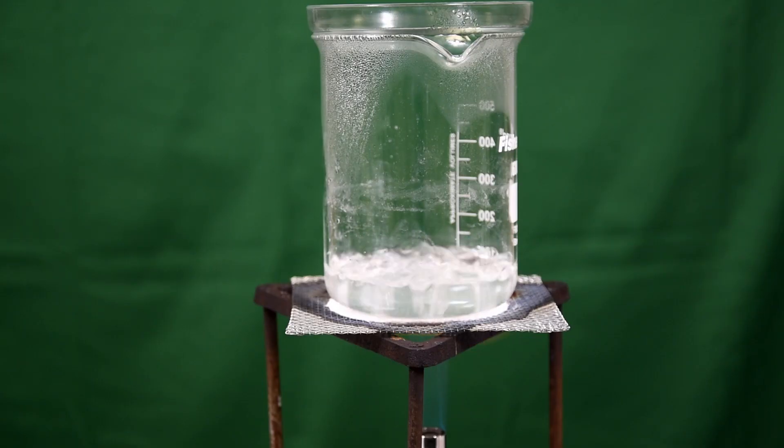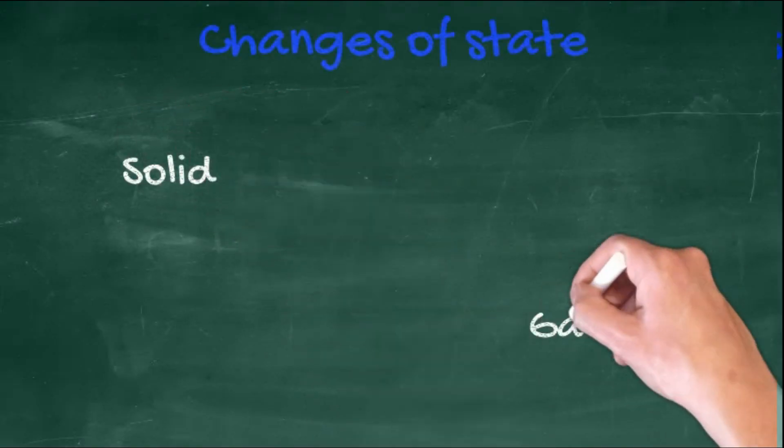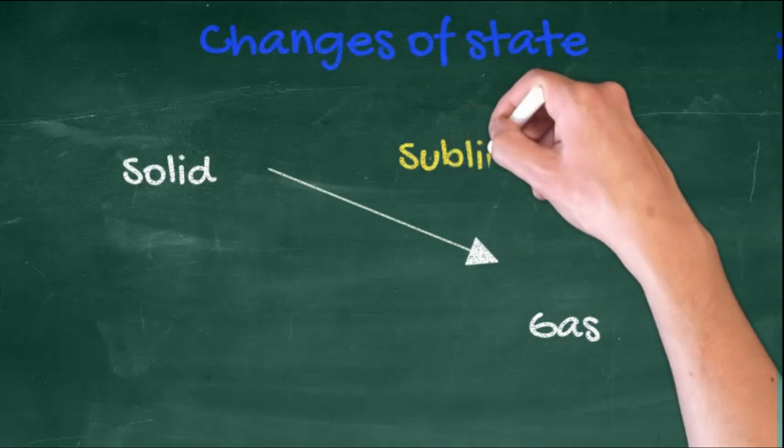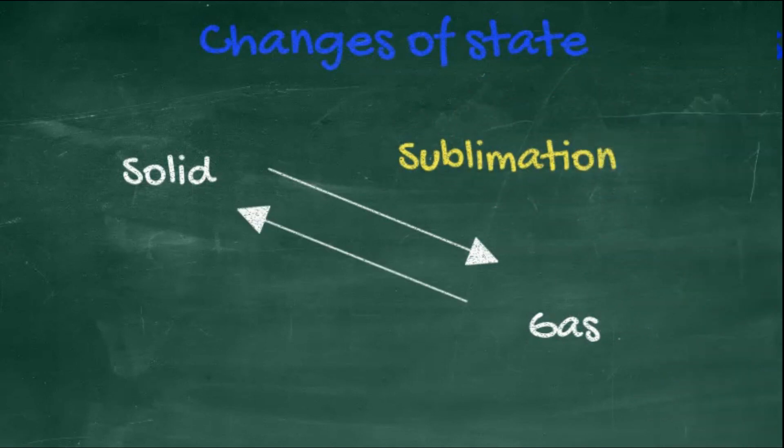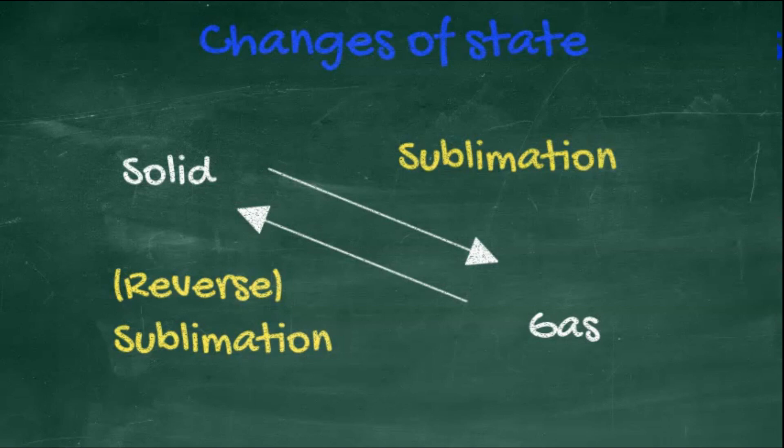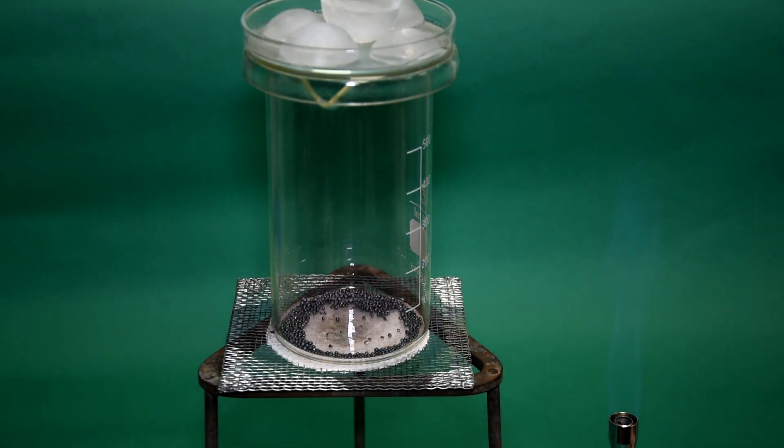There are some examples of substances that will go from solid directly to gas without going through the liquid phase. This is called sublimation, and going from gas to solid, reverse sublimation.